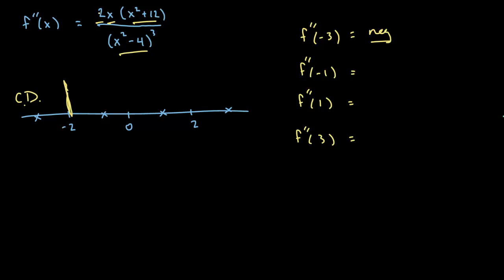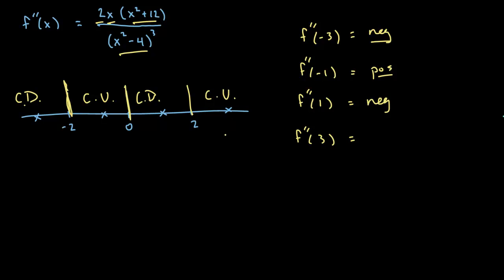Plugging in −1: positive times negative times positive divided by a negative denominator — negative divided by negative is positive — so concave up. Plugging in 1: positive, positive, positive divided by negative — concave down. Plugging in 3: everything is positive — concave up. So the pattern is: concave down, concave up, concave down, concave up.